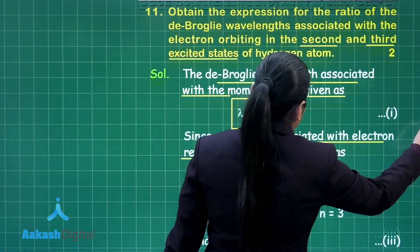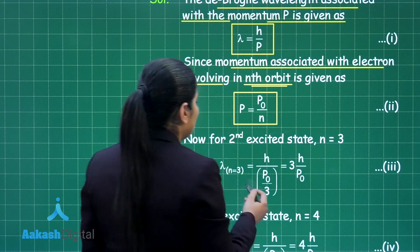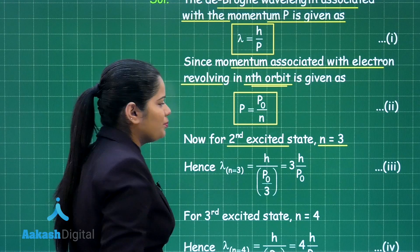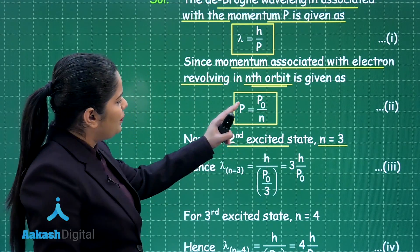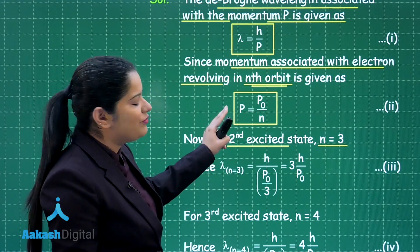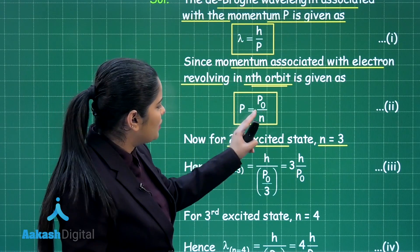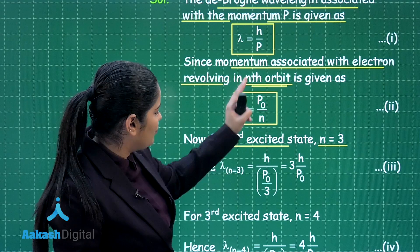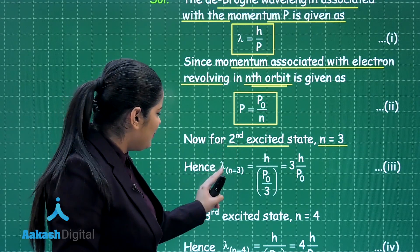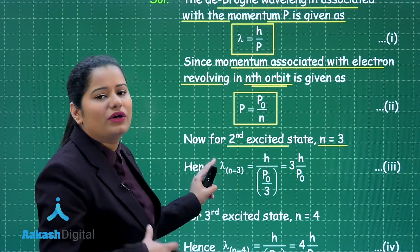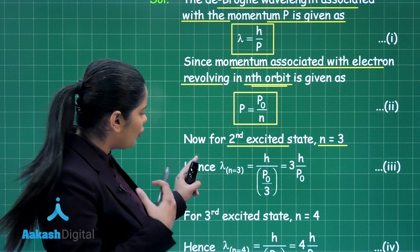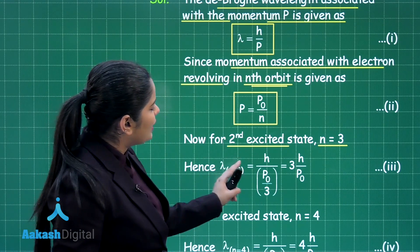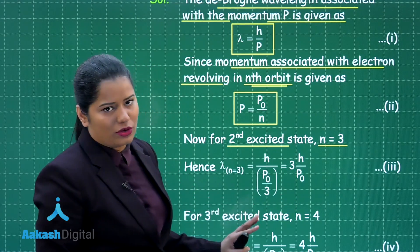When we put the values for the second excited state, we put n as 3. The momentum comes out to be p naught by 3. Substituting that value into equation 1, the de Broglie wavelength for the electron in the second excited state comes out to be 3h by p naught.